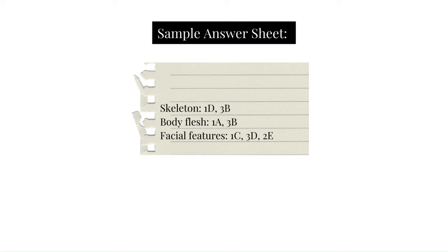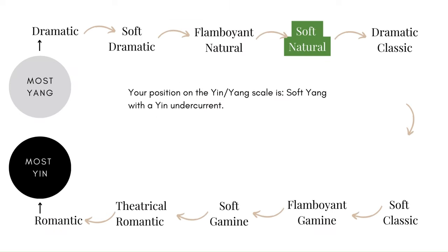The structure is broad, blunt, and elongated, but the flesh is generally softer and there's some softness in the features. On the yin-yang scale, the soft natural is characterized as soft yang with a yin undercurrent. Comparing it to the flamboyant natural, a soft natural is generally smaller and softer, but with that same elongation, broadness, and Kibbe width.